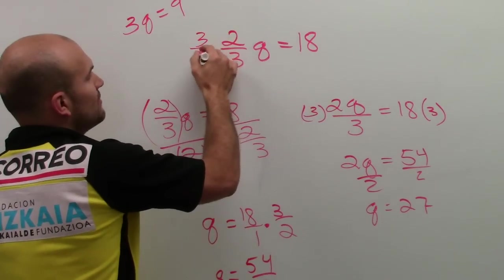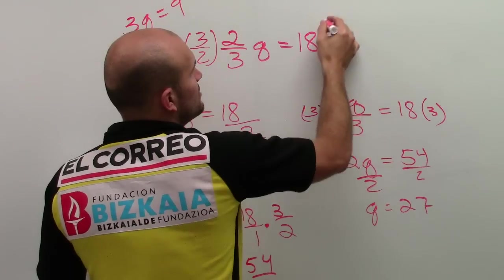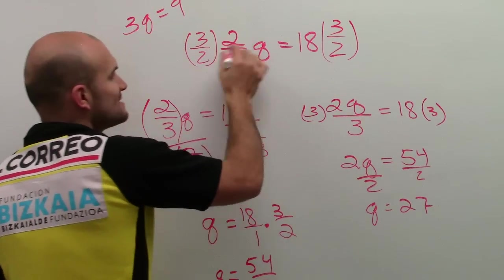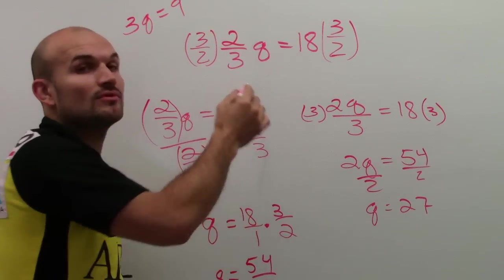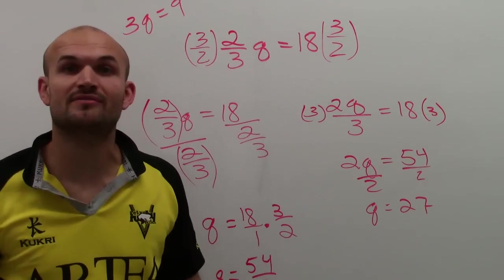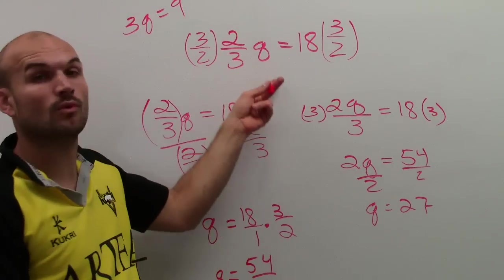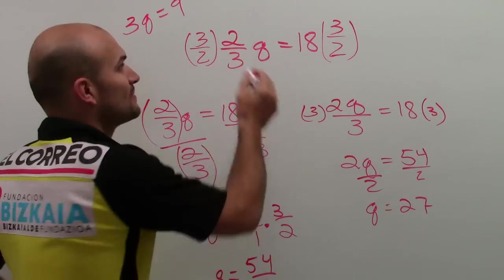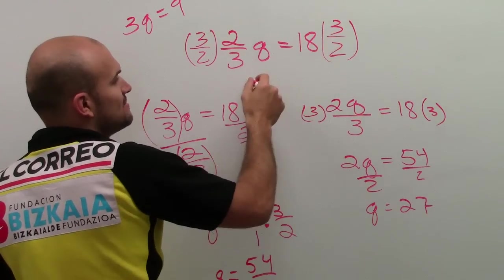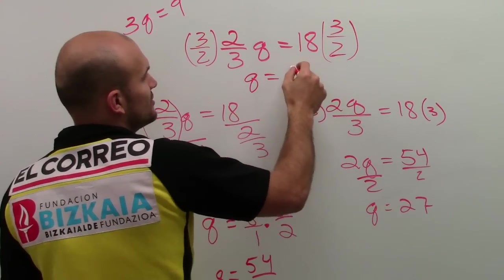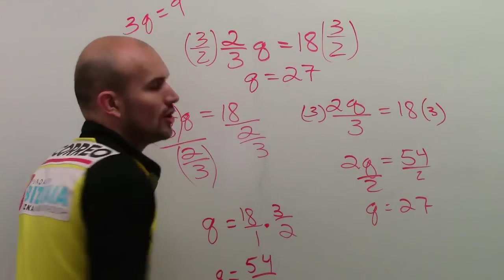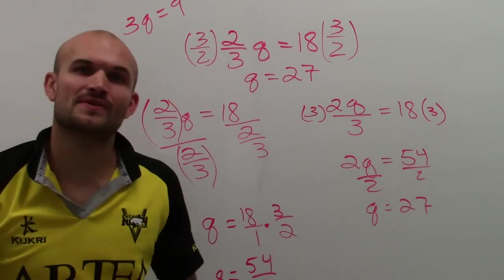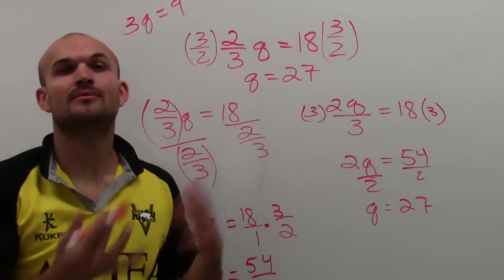Why do we multiply by the reciprocal? Well, when you multiply by the reciprocal on the left side, a number times its reciprocal is the multiplicative inverse, so that's going to cancel out to 1, leaving you just with q, which is now isolated. And then 18 times your fraction is just going to be, again as we already solved, 27. So there you go. Sorry for the long explanation, but I hope it helps.